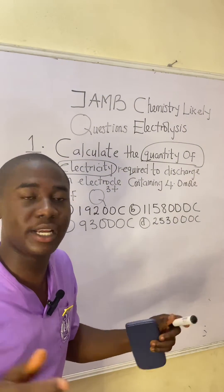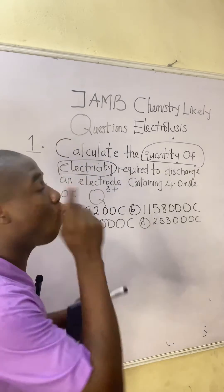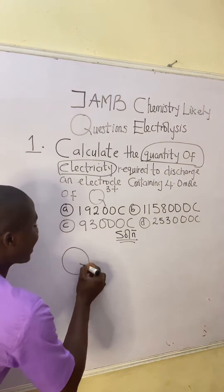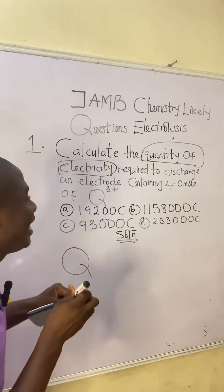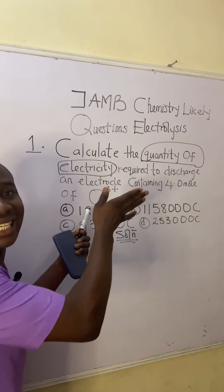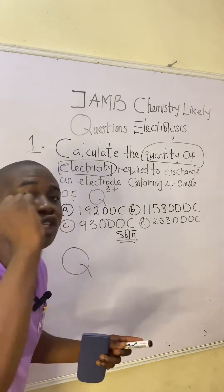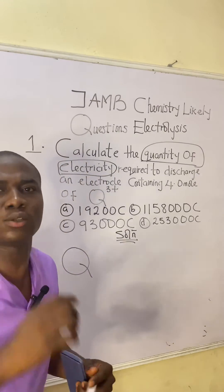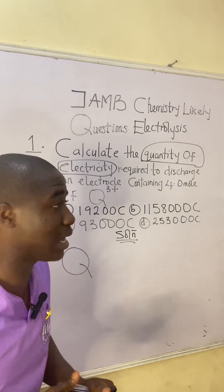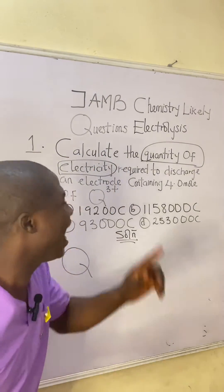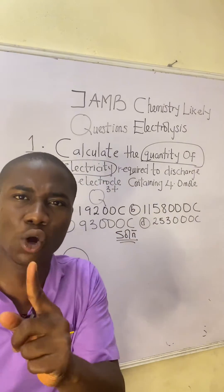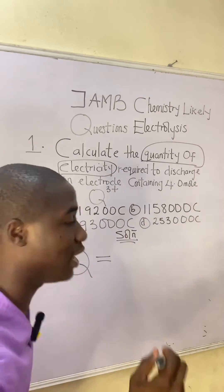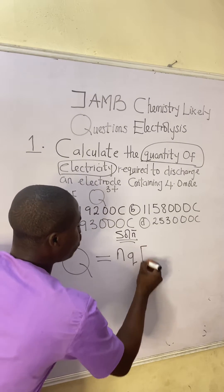First of all, we must note that quantity of electricity in chemistry or science is symbolized as Q. This must be noted — the Q in the formula is different from the Q they ask for in the question. Whenever we see this type of question in the JAM exam asking for quantity of electricity and they give us number of moles, there is a formula we must use: Q = nqF.